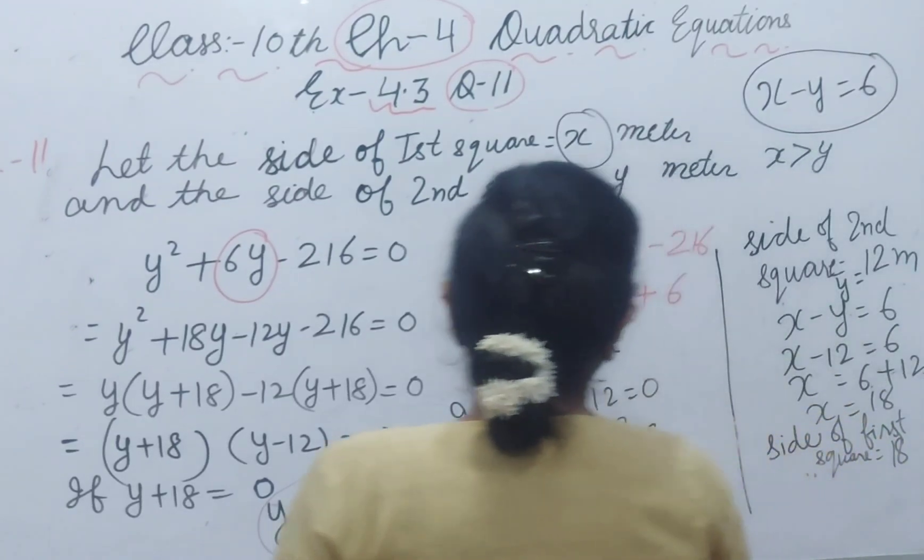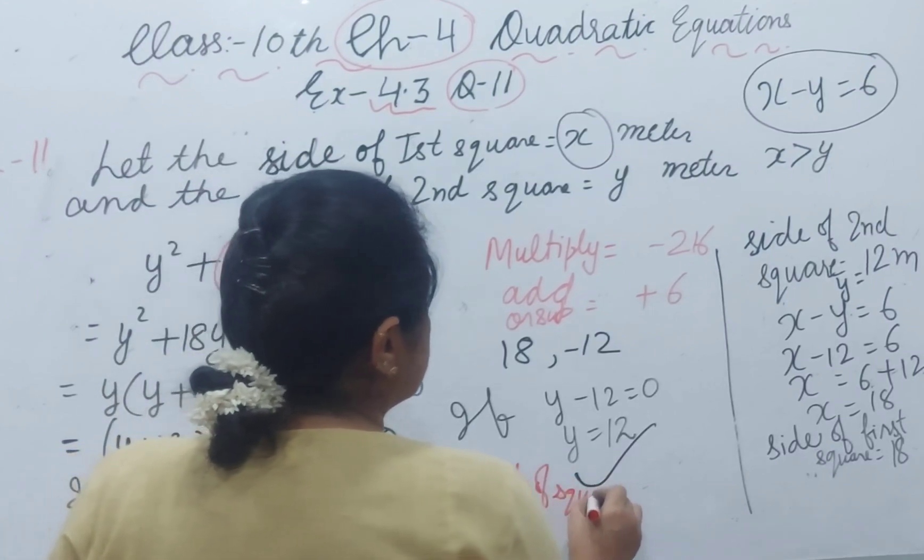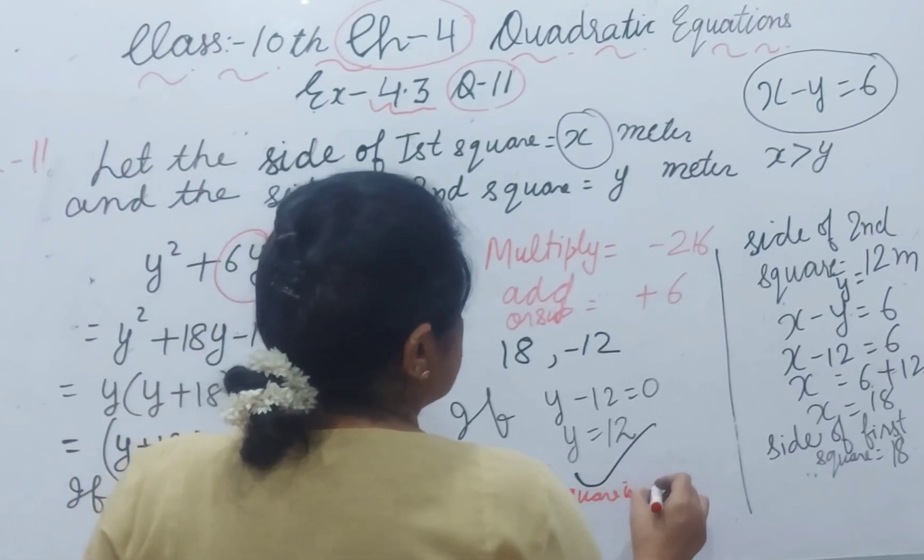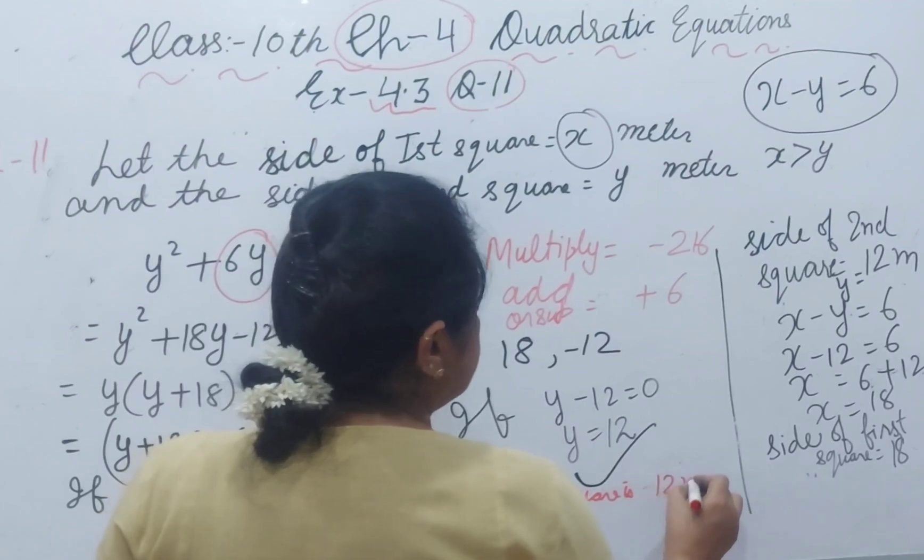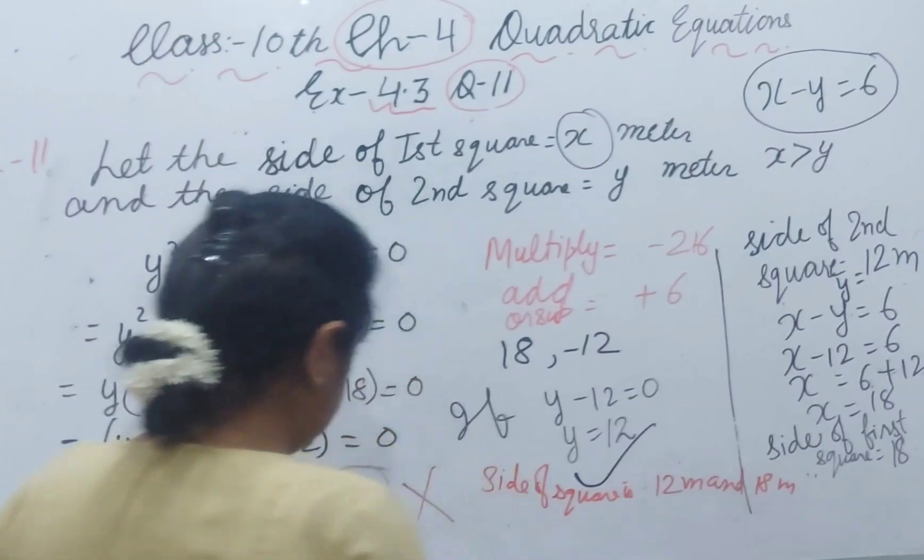Now sides of squares are 12 meter and 18 meter.